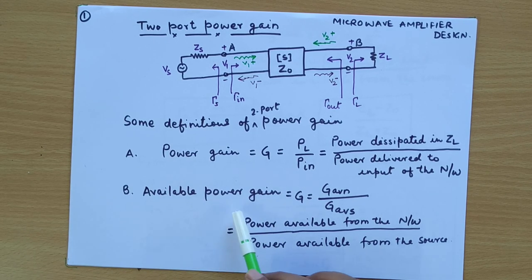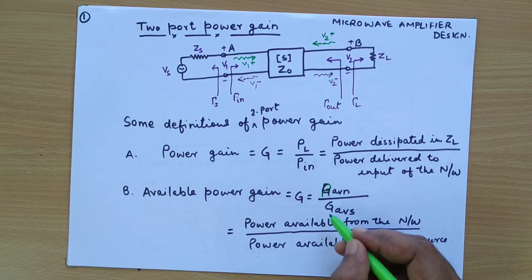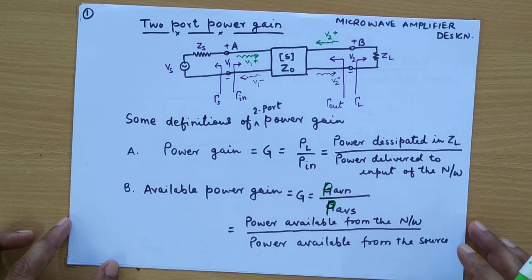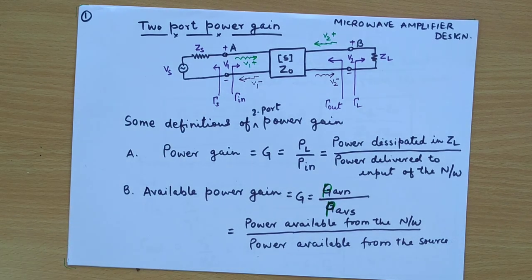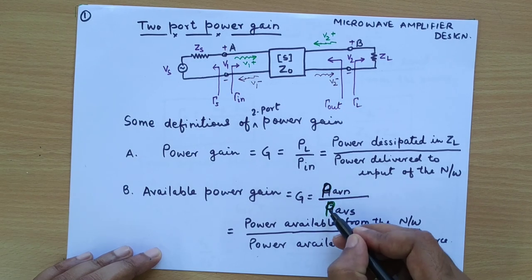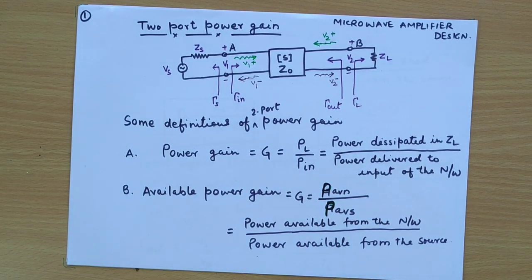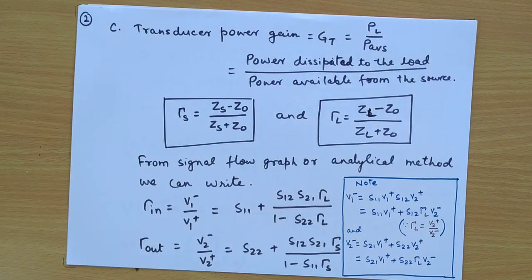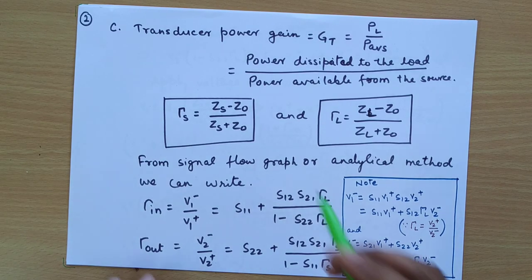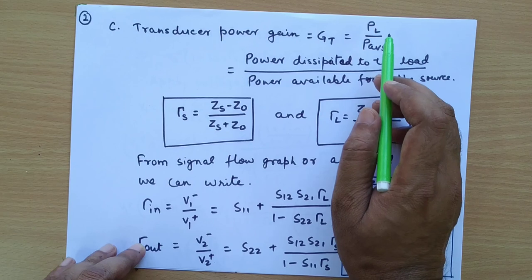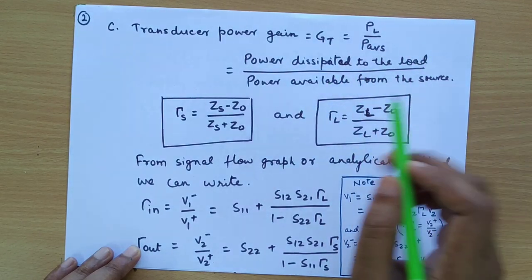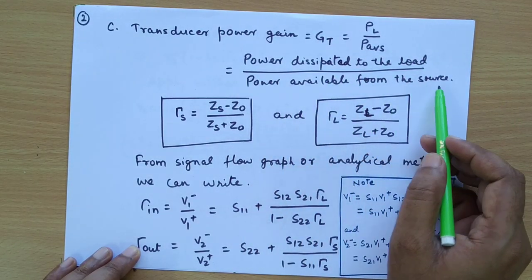We have available power gain, which is defined as the ratio of available power from the network to available power from the source. We also have a third type of power gain known as transducer power gain. It is defined as PL divided by PAVS, where PL is power delivered to the load, and PAVS is power available from the source.